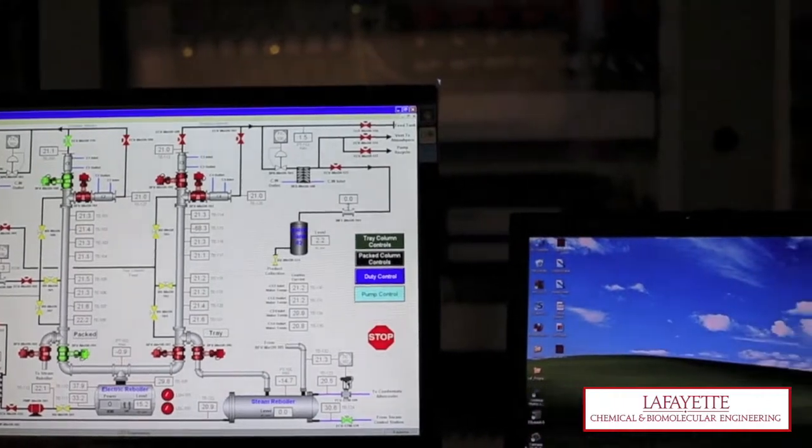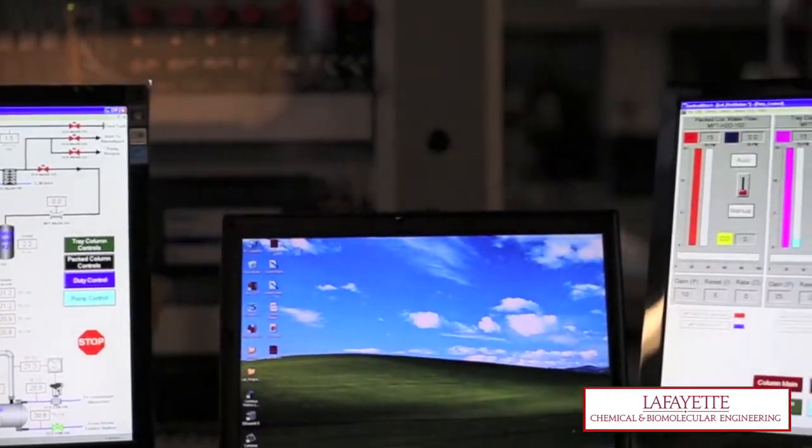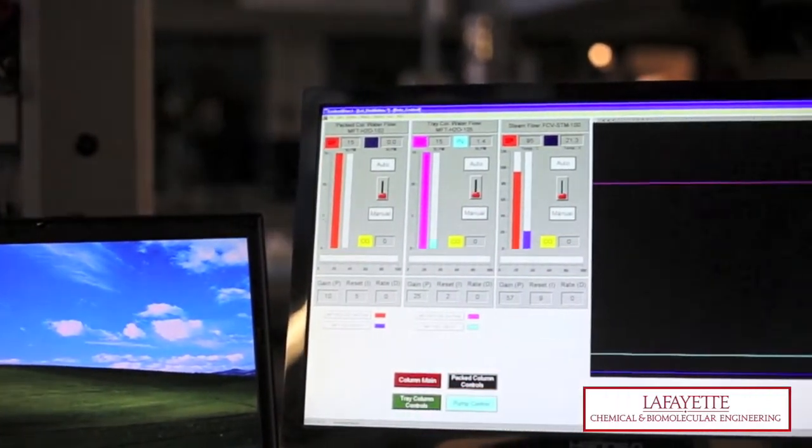Students may also operate one column or both columns at any given time through the use of two control stations, featuring dual human-machine interfaces, or HMIs.